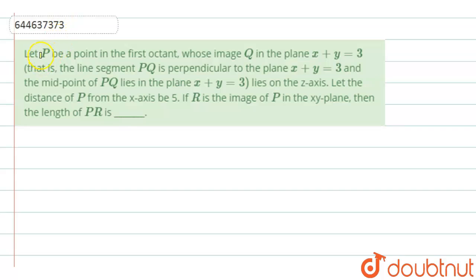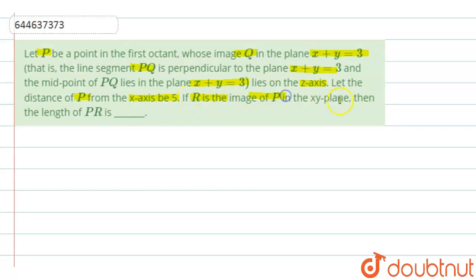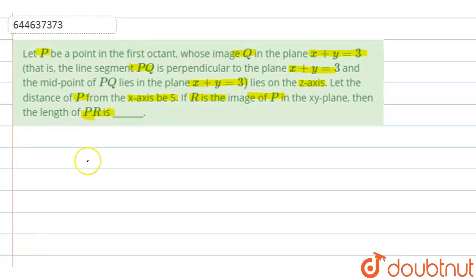The question says: let P be the point in the first octant whose image Q in the plane x plus y equals 3 — that is, the line segment PQ is perpendicular to the plane x plus y equals 3, and the midpoint of PQ lies on the z-axis. Let the distance of P from the x-axis be 5. Let R be the image of P in the xy-plane. Then find the length of PR.